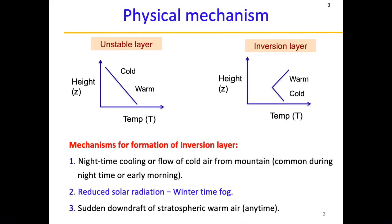The second mechanism is reduced solar radiation. If there is reduced solar radiation then the ground will be cooler, hence we have this wintertime fog which is very common during the winter season.